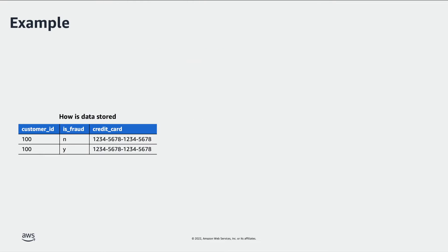Let's see an example use case on dynamic data masking for financial data. This example shows a table that contains a sensitive 16-digit credit card number and a column indicating whether the record is tagged for fraud prevention or not. The full credit card number is stored at rest. When users query this table, you want the credit card number to be masked dynamically based on the user's role.